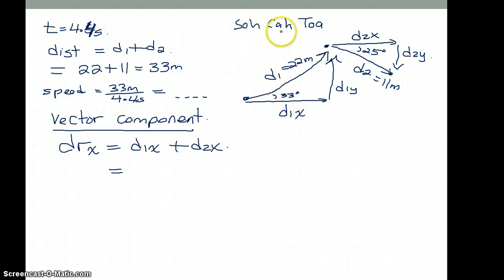Solving d1x, we know d1x is at the bottom here. So using SOH CAH TOA - sine opposite over hypotenuse, cos adjacent over hypotenuse, and tan opposite over adjacent - to figure out my d1x, we know this is on the adjacent side. So therefore we're going to use cos. So cos of 33 times 22, and this is going in the easterly direction, plus cos of 25 times 11, which is also going in the easterly direction.